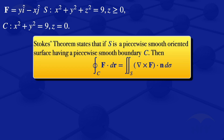Stokes' theorem states that if S is a piecewise smooth surface having a piecewise smooth boundary C, then the integral of F·dr along the closed curve C in the positive direction equals the double integral over the surface S of (∇×F)·n dσ, where dr = dx i + dy j.